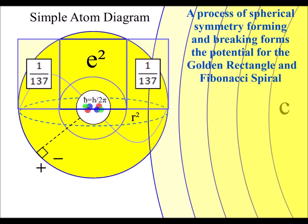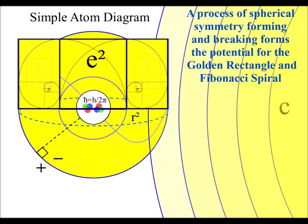In this theory it is a different mathematical description of the golden ratio, forming the potential for the Fibonacci spiral.